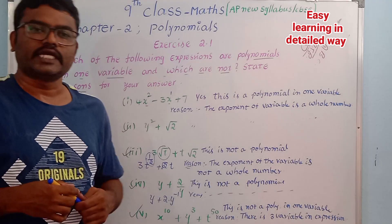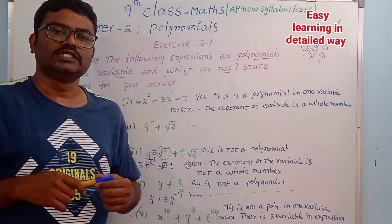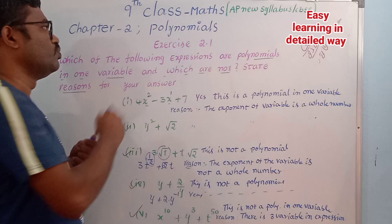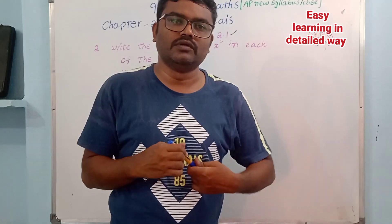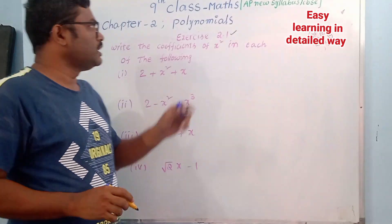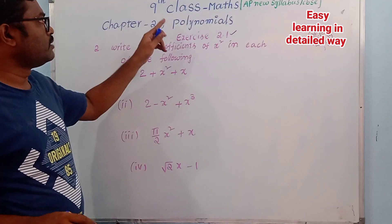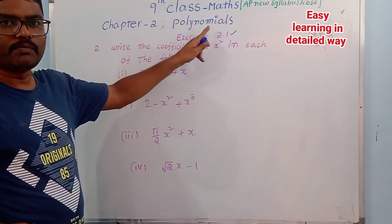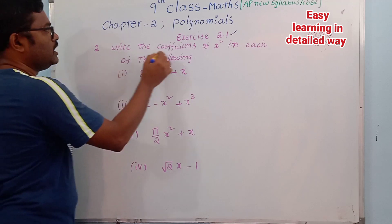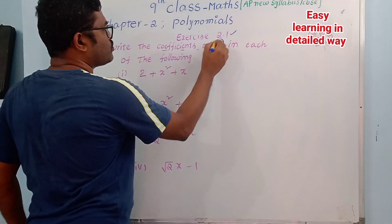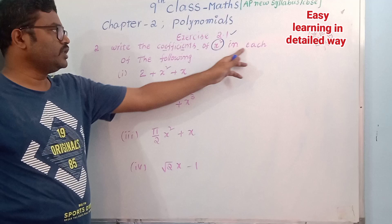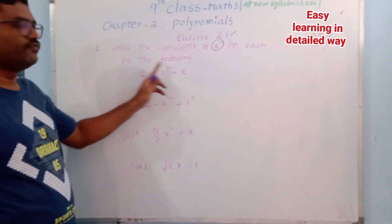Now let's move on to the second question of exercise 2.1. The question is: write the coefficients of x squared in each of the following expressions.